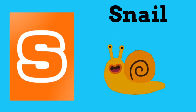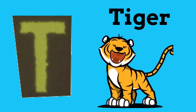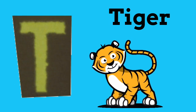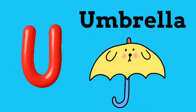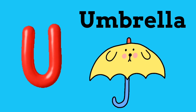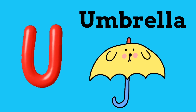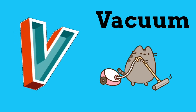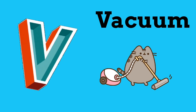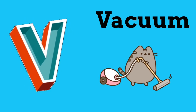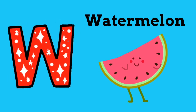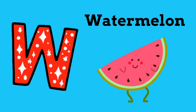T is for Tiger. Tiger. U is for Umbrella. Umbrella. V is for Vacuum. Vacuum.